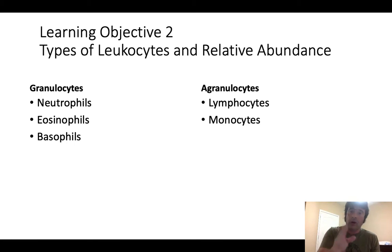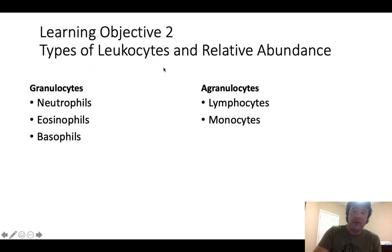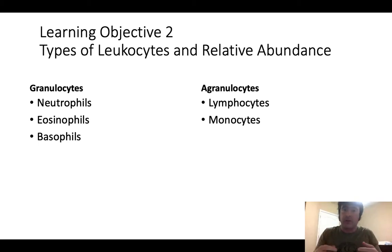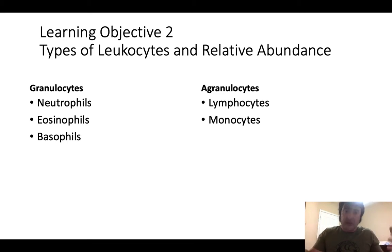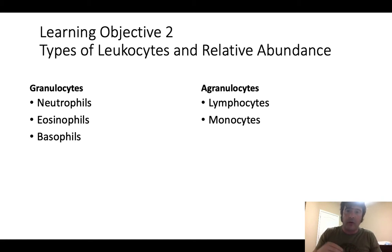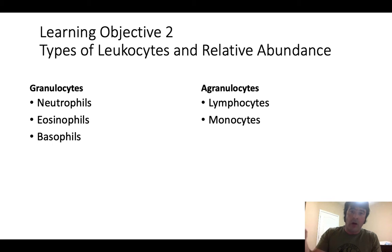Learning objective two: types of leukocytes and their relative abundance. A leukocyte — leuko means white, cyte means cell — is a white blood cell. Less than one percent of whole blood consists of white blood cells and platelets, making up the buffy coat. Each of the white blood cells has a different abundance or relative ratio, meaning they're present in different amounts. There's a good mnemonic for that which we're going to discuss.